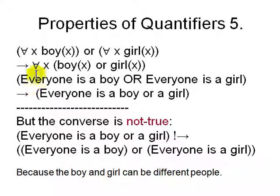And similarly for for-all. For all x, everyone is a boy or everyone is a girl, implies everybody is a boy or a girl. But the converse is not true. That means everyone is a boy or a girl doesn't imply everybody is a boy or everyone is a girl.